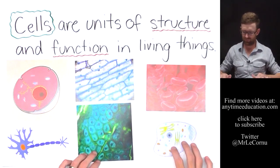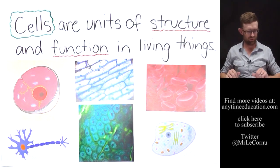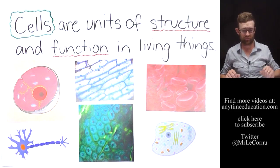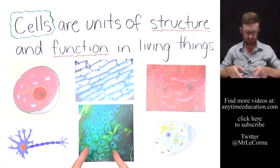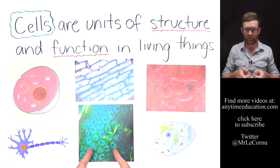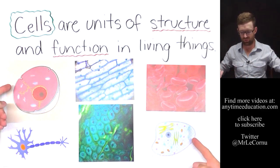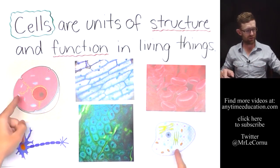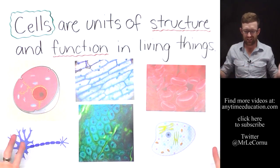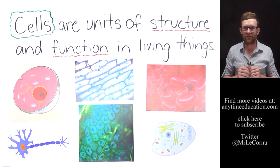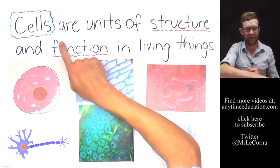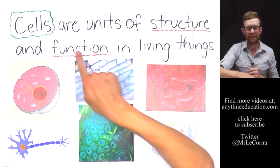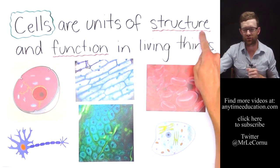Just bringing in a few different pictures here of some different cells. For example, we've got a nerve cell, some onion cells, red blood cells, some other plant cells here, and just a couple of general eukaryotic cells. You can see cells are everywhere. If it's a living thing you're talking about, it is made of cells.